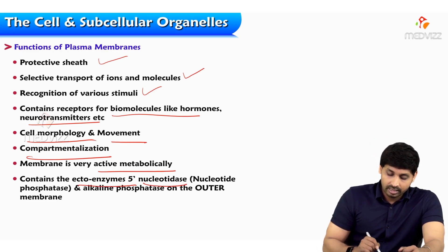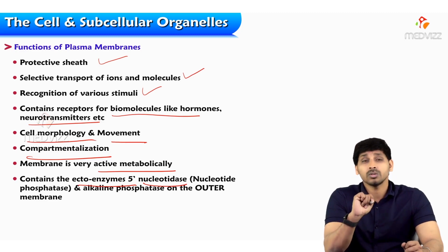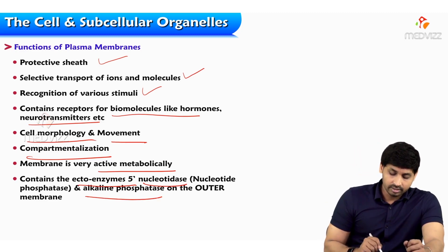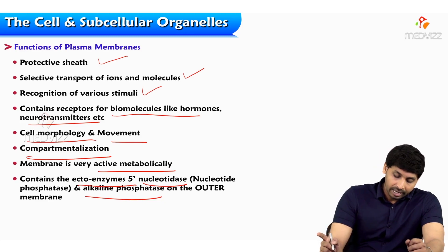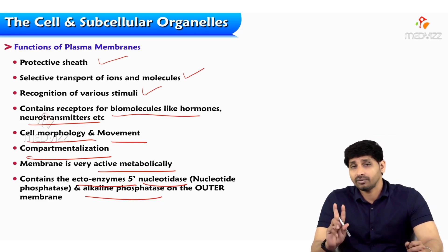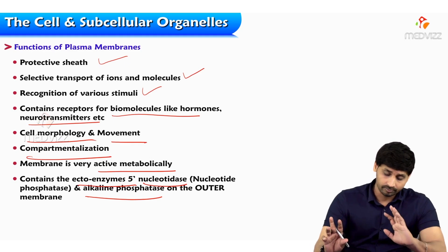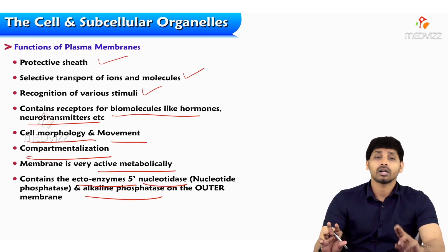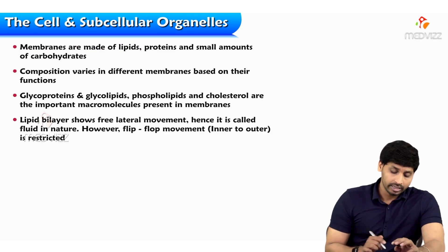The membrane contains the enzyme 5' nucleotidase, which is a marker for biological membrane. The other marker enzyme is alkaline phosphatase — for the outer membrane, alkaline phosphatase; for the inner membrane, 5' nucleotidase.